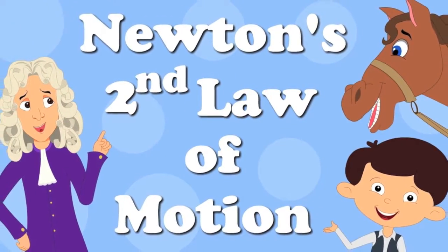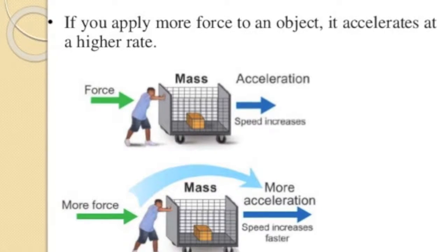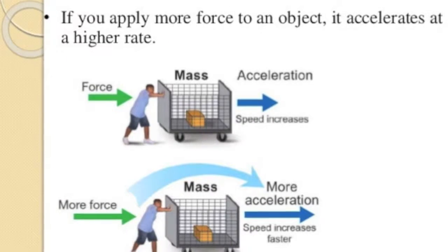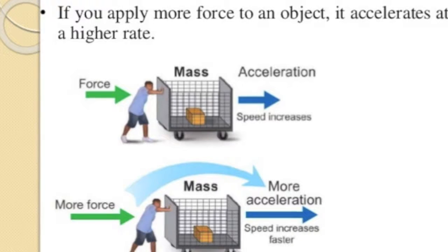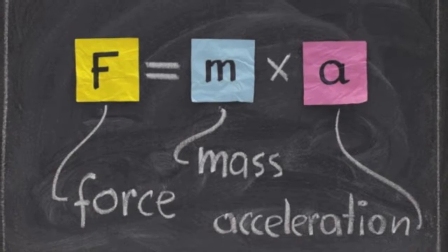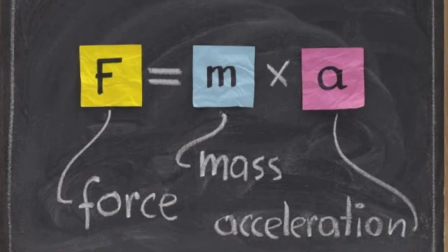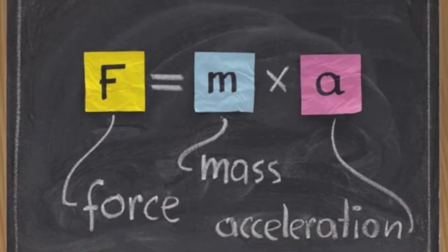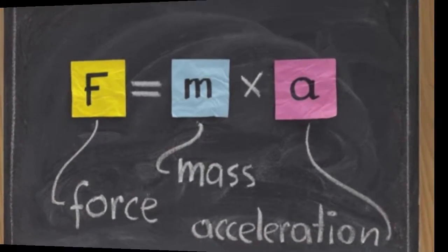Newton's second law states the rate of change in momentum of an object is directly proportional to the unbalanced force in the direction of the force, which basically means that if less force is applied, then less acceleration is produced, and vice versa. The equation for this is force equals mass times acceleration.